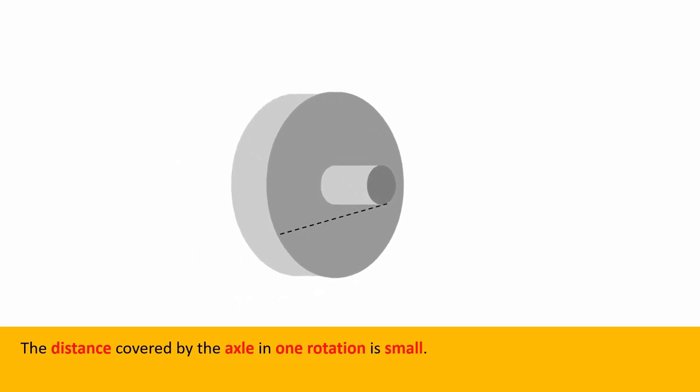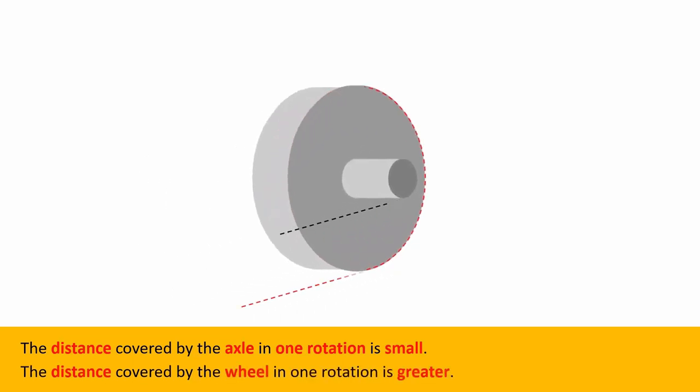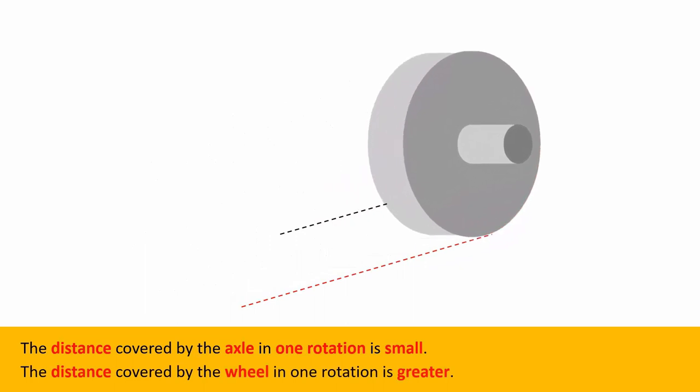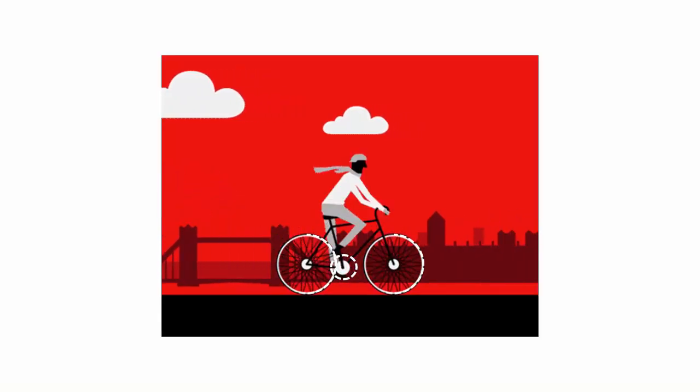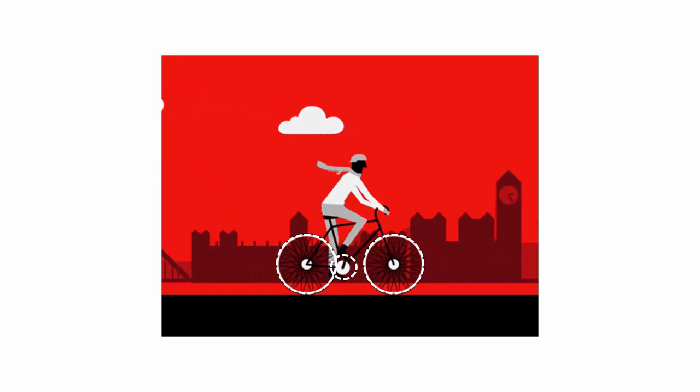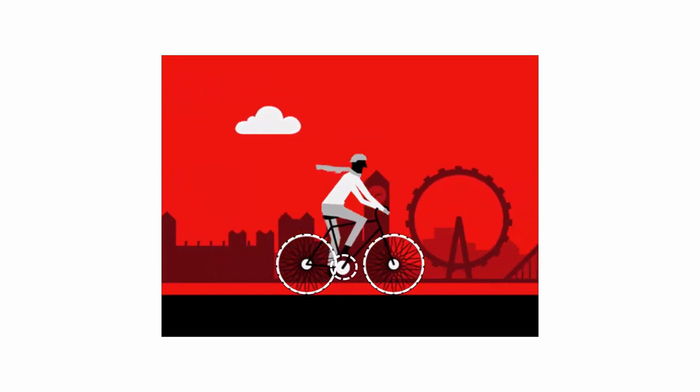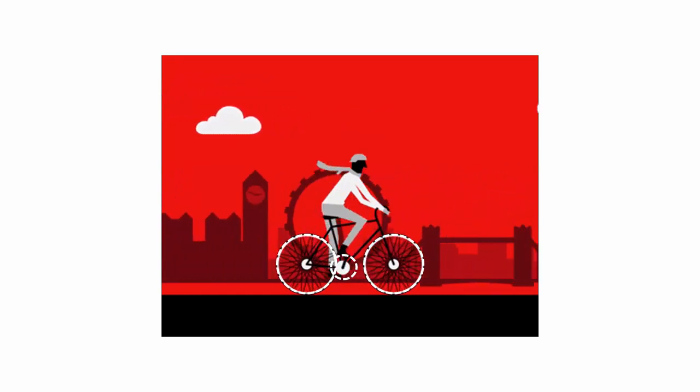On the other hand, one rotation of the wheel covers a larger distance compared to the axle. So moving the axle through a smaller distance results in a larger distance covered by the wheel. Due to this reason, the wheel and axle is used in bicycles. Therefore, we can either turn the wheel or the axle depending upon our application.